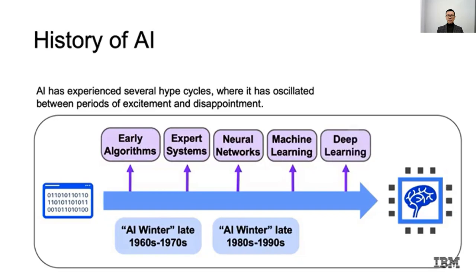AI has experienced several hype cycles where it has escalated between periods of excitement and disappointment. As you can see, in the 1960s to 1970s it was called a winter, because during this period there was not much investment and interest in Artificial Intelligence.